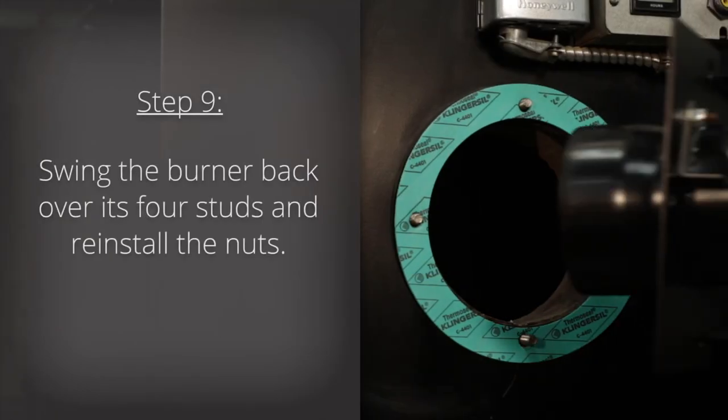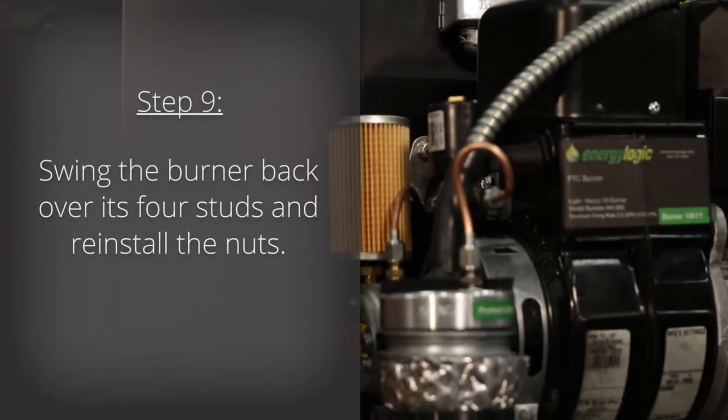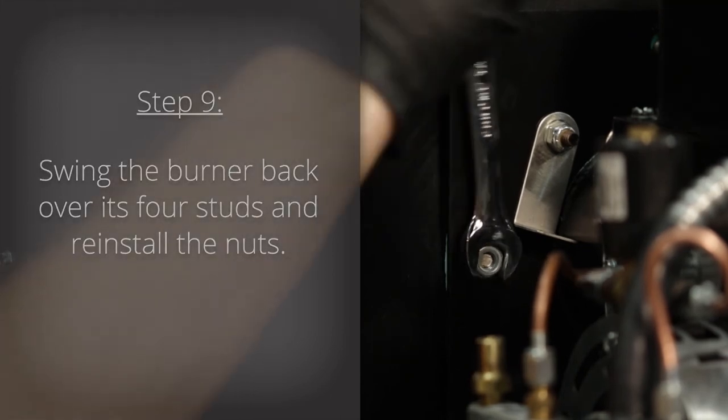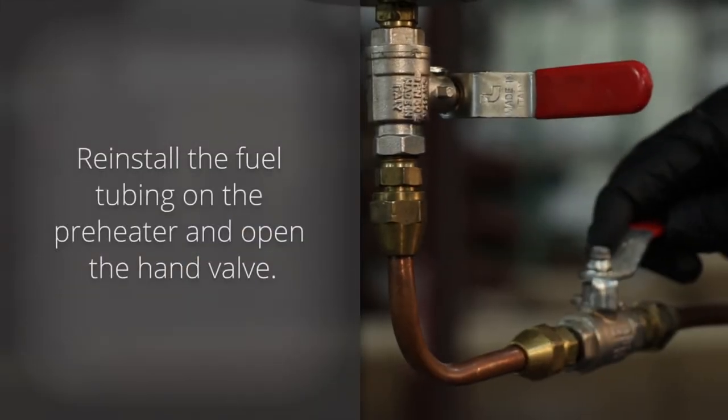Step nine, swing the burner back over its four studs and reinstall the nuts. Reinstall the fuel tubing on the preheater and open the hand valve.